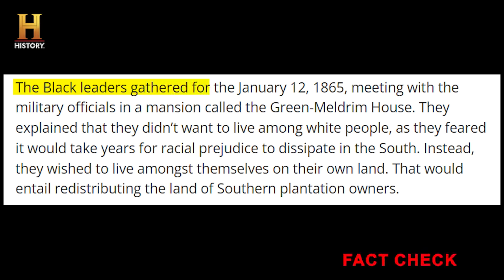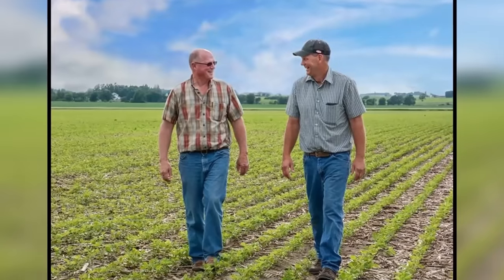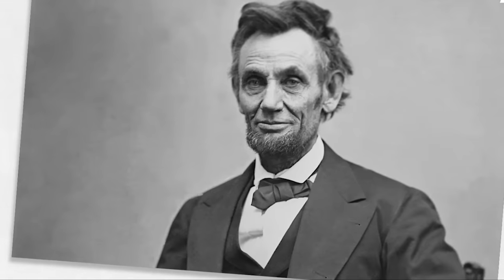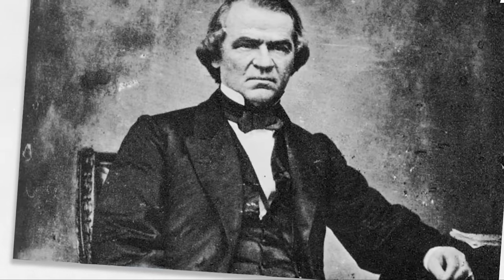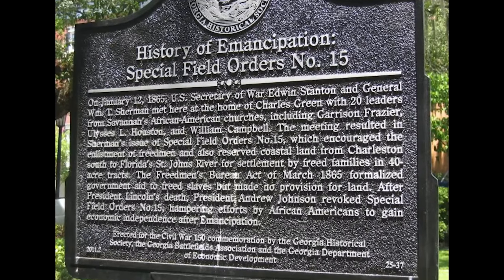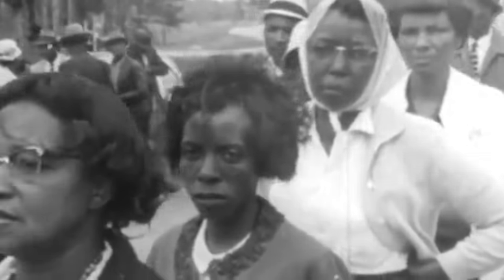Interestingly, the U.S. government acknowledged the necessity of reparations during that period and issued an order to allocate 40 acres of land and a mule to all formerly enslaved families, offering them an opportunity to build wealth and financial stability. However, following the assassination of President Abraham Lincoln, President Andrew Johnson adopted a different stance, revoking Field Order 15 and choosing to return the land to former slave owners instead of providing black individuals with the means to support themselves.